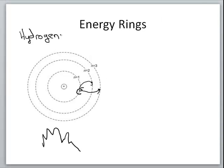Unfortunately, Bohr's model only works for the hydrogen atom, which we'll address in a later vodcast. The important part about the Bohr model is the difference in energy from one level to the next. To promote an electron from the first to the second energy level, it needs one quantum of energy — a specific amount. If you put not quite enough energy in, that electron won't make it to the next level.